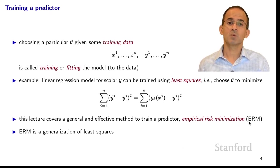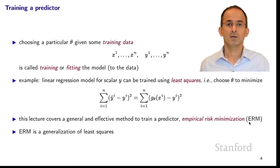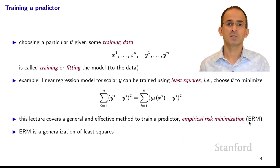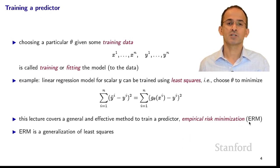That's a very reasonable way of learning a predictor. In this lecture we'll cover a more general method which is very widely used and very effective — it's called empirical risk minimization. At its heart it is a generalization of the least squares idea.